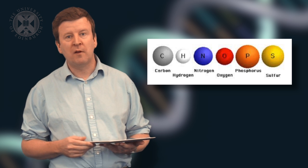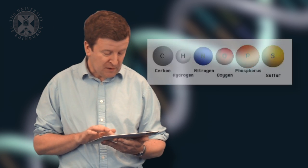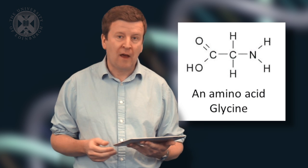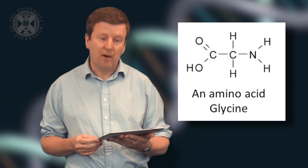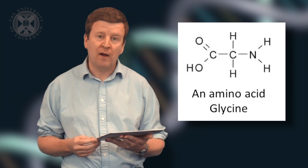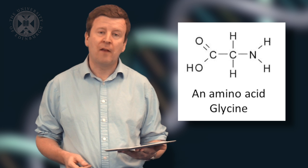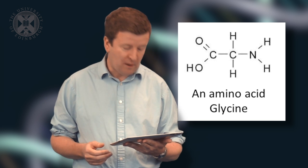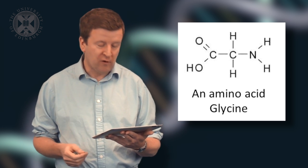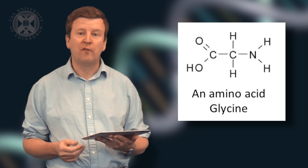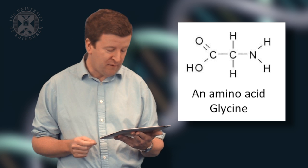So how do we take these elements and put them together to start to form the building blocks of life? Well, these elements or atoms come together to form molecules. And I've shown here an example of one particular molecule called glycine, which is an amino acid, one of the building blocks of proteins. And glycine, as you can see, is made up of some very simple elements. There are two carbon atoms there. There's a nitrogen, some hydrogen and oxygen. So you can see that even glycine conforms to the idea of CHNOPS. It's constructed of some of those six basic elements.